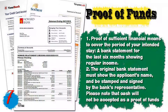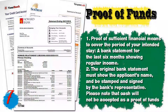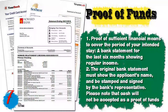Number seven, you will need a proof of funds — proof of sufficient financial means to cover the period of your intended stay. A bank statement for the last six months showing regular income is required. The original bank statement must show the applicant's name and be stamped and signed by the bank's representative. Please note that cash will not be accepted as proof of funds.